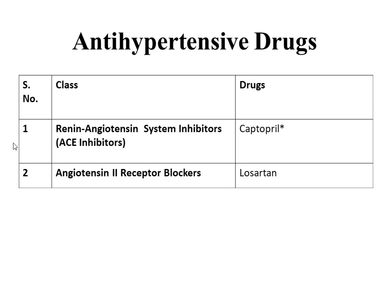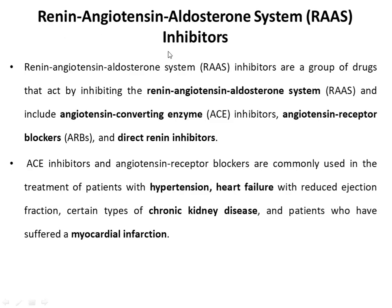We are studying these first two classes at the same time because both belong to each other with respect to their mechanism of action. Renin-Angiotensin-Aldosterone System inhibitors, or RAS inhibitors, are a group of drugs that act by inhibiting the Renin-Angiotensin-Aldosterone system, including angiotensin converting enzyme inhibitors, angiotensin receptor blockers, and direct renin inhibitors. In our syllabus, ACE inhibitors and angiotensin receptor blockers are given.